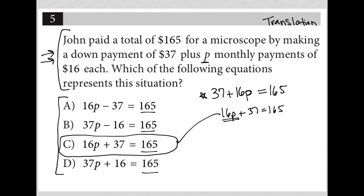16 times P for the monthly payments, the one time down payment of $37 and a total of 165.